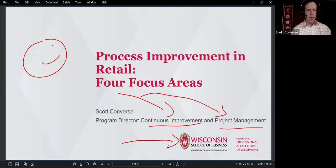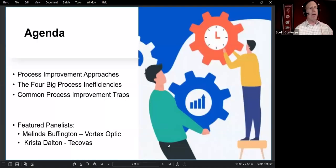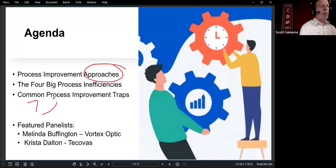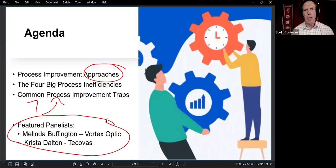Let's roll up our sleeves and get to work here. So today's agenda, I want to spend a little bit of time taking a look at different approaches that you could consider for doing a process improvement project. I want to take a look at four big process inefficiencies that often occur in the workplace. I'm also excited about sharing seven common process improvement traps that I see happen in project teams.